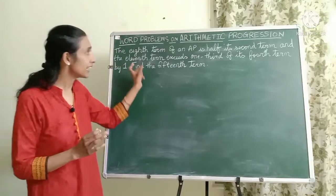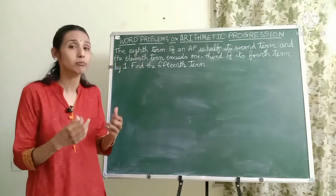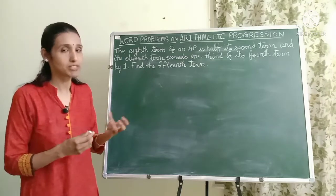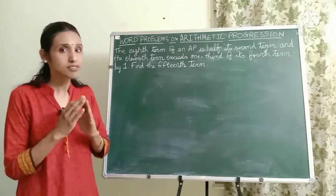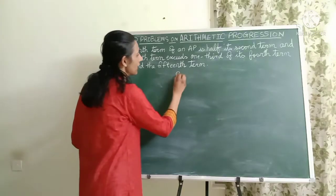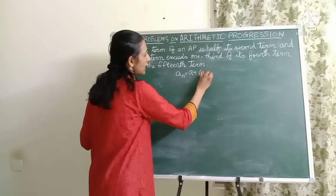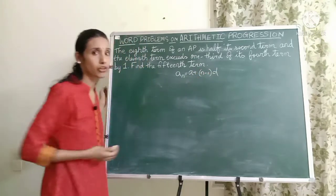So friends here you see you have the 8th term, 2nd term, 11th term, 15th term. We are all talking about the terms of the AP. So shall we first see what is the formula for the nth term of an AP? Yes, the formula is AN equals to A plus N minus 1 times D. I hope you recall this formula.